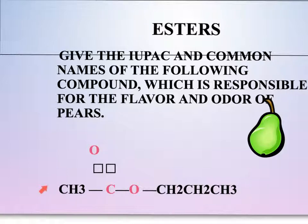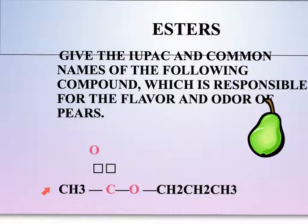Here we have the structure for the ester responsible for the flavors and odors of pears. Notice the boxes representing the double bond oxygen — so carbon is double bonded to an oxygen and single bonded to this oxygen. I'd like for you to try to name this chemical. See if you can name this ester correctly, and the answer will be on the next slide. Hit pause, solve this, and then check your answer.